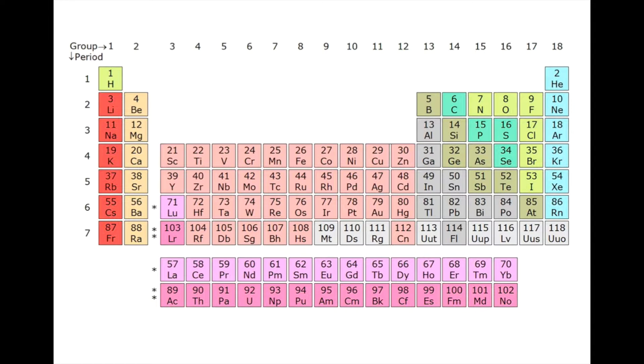All right, so the periodic table is divided into groups that are columns going vertically, and they go from column 1 or group 1 all the way to group 18. And then you have periods that are rows and they go 1 through 7. So let's just talk about groups first.